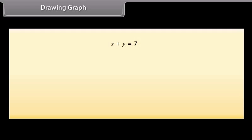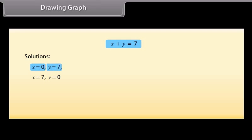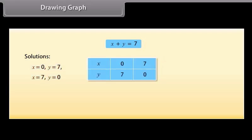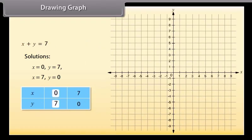Let us now draw the graph of the equation x plus y is equal to 7. To draw the graph, we need at least two solutions: x is equal to 0, y is equal to 7, and x is equal to 7, y is equal to 0. We use a table with these values of x and y. Plot the point (0, 7) and the point (7, 0) on the graph, then join these two points. This is the required graph for the given equation.